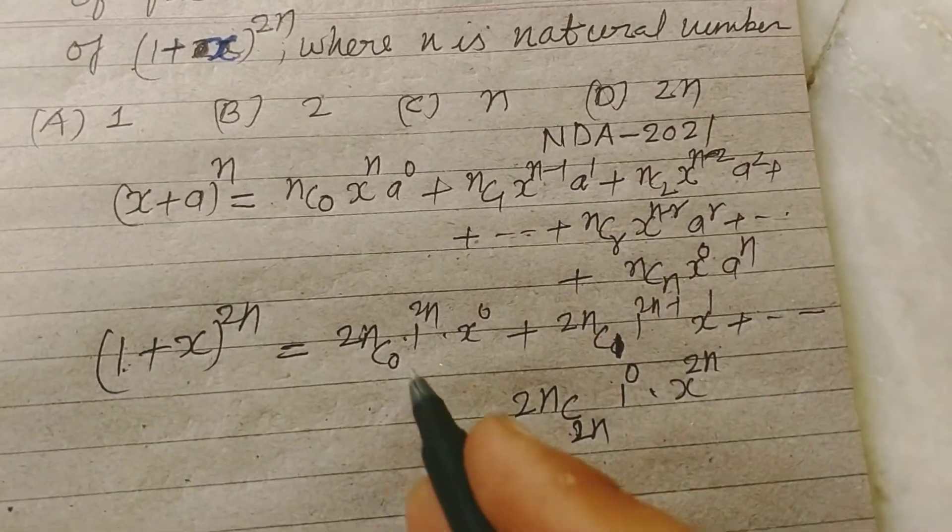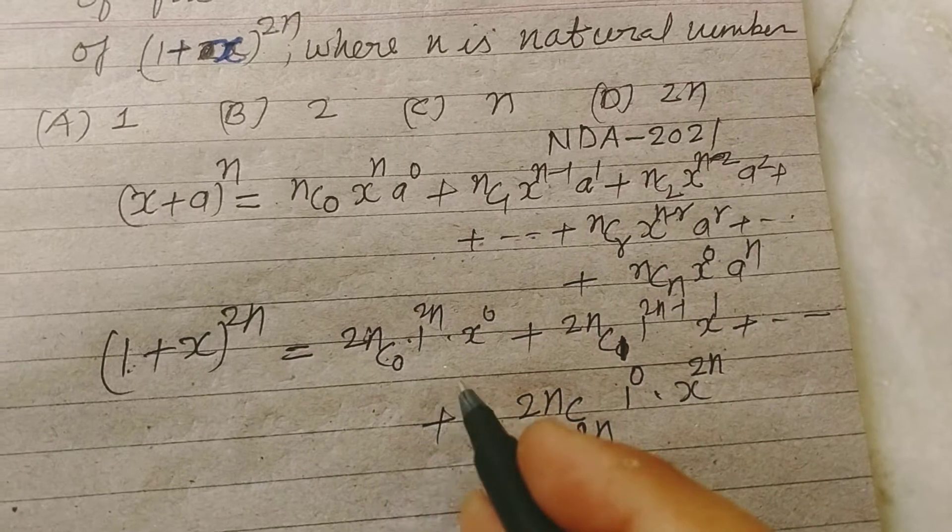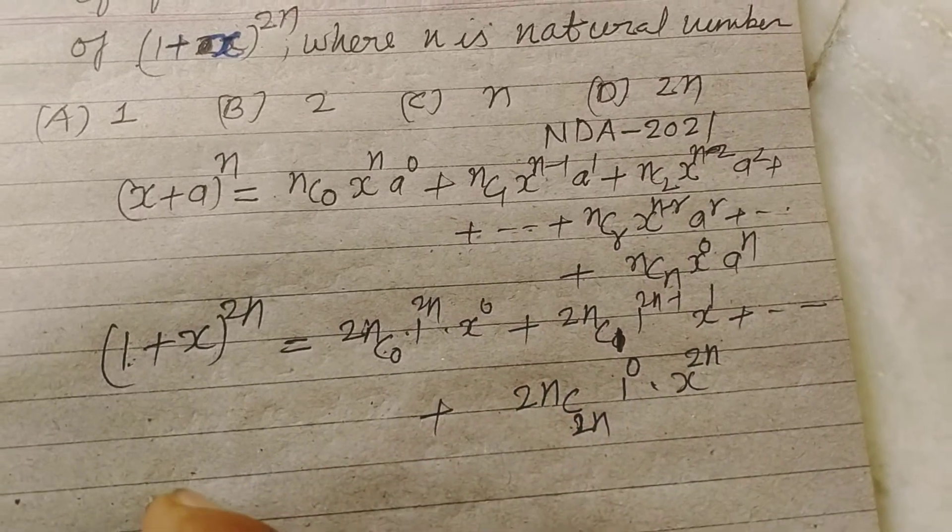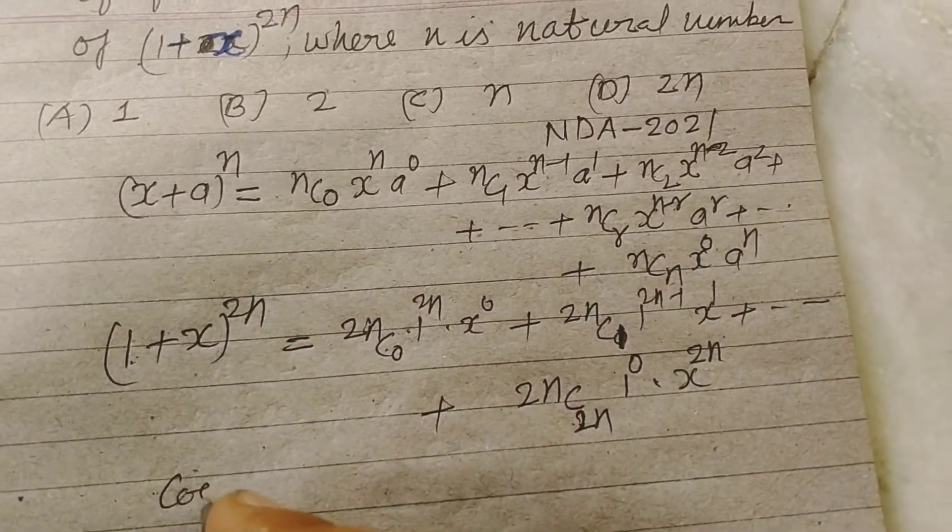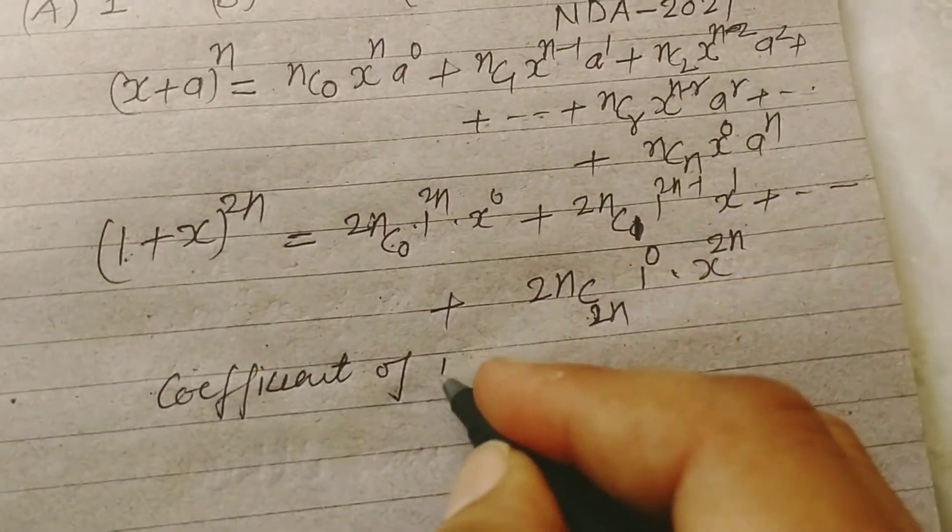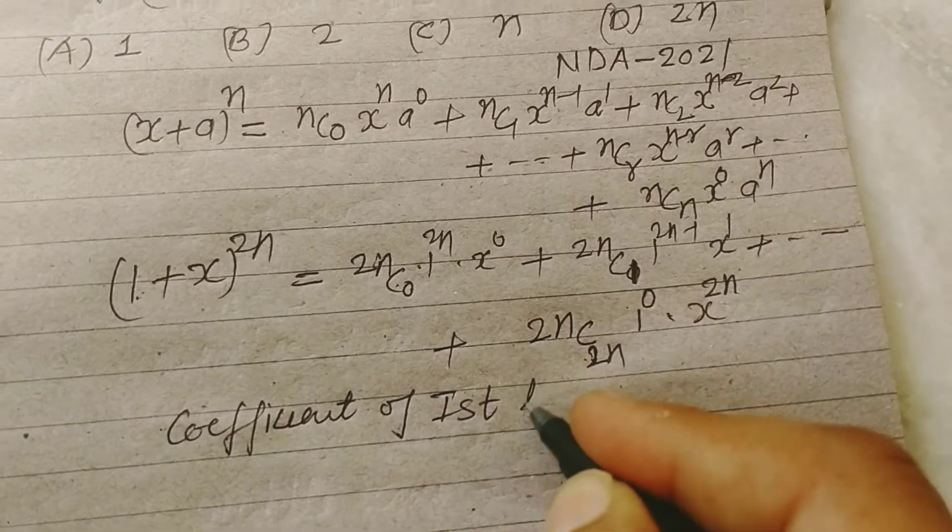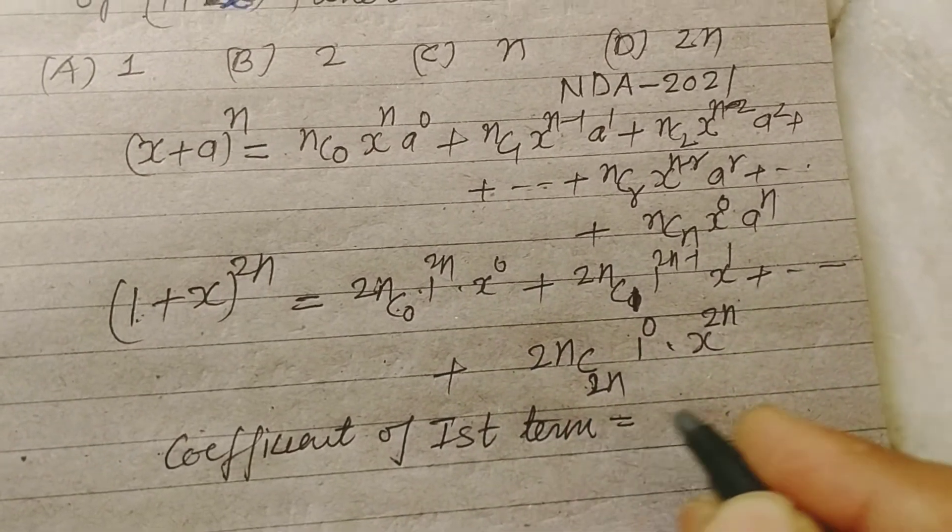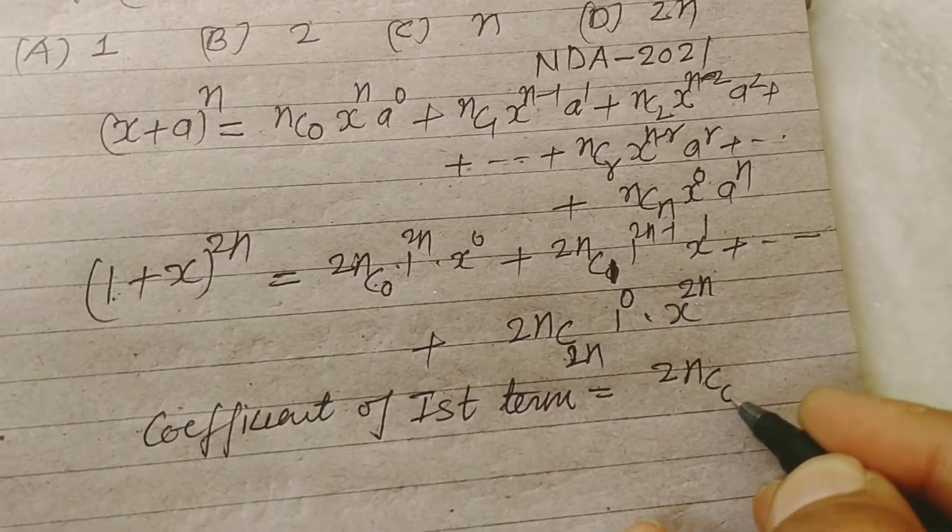Now, coefficient of last and first term. This is the coefficient of first term, first term equal to 2nC0, coefficient of last term is 2nC2n.